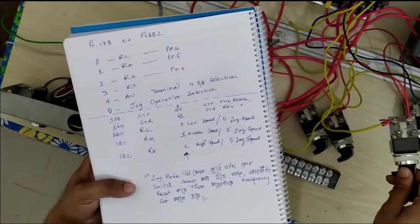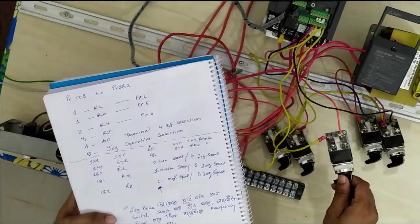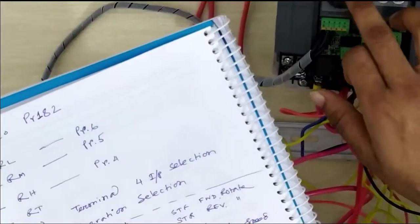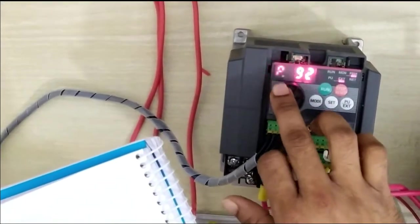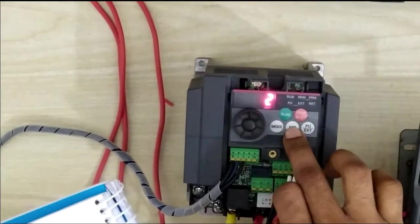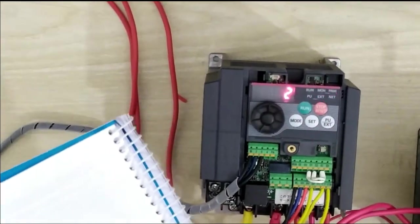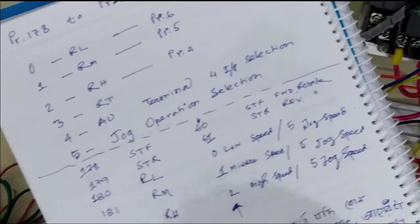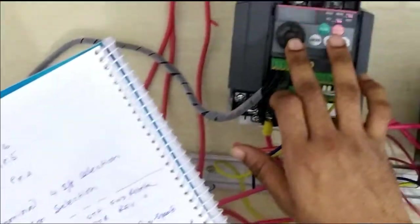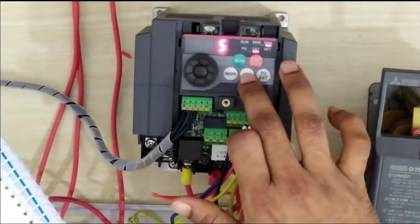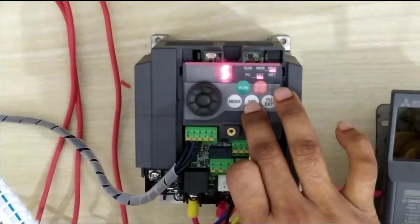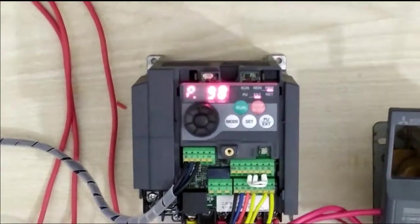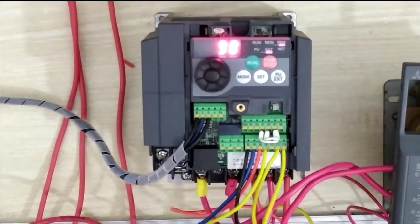I'm going to set parameter 182 to jog mode, which is value 5. Now it's set to 5, which means our high speed is fixed by jog frequency. The jog frequency setting is in parameter 15.